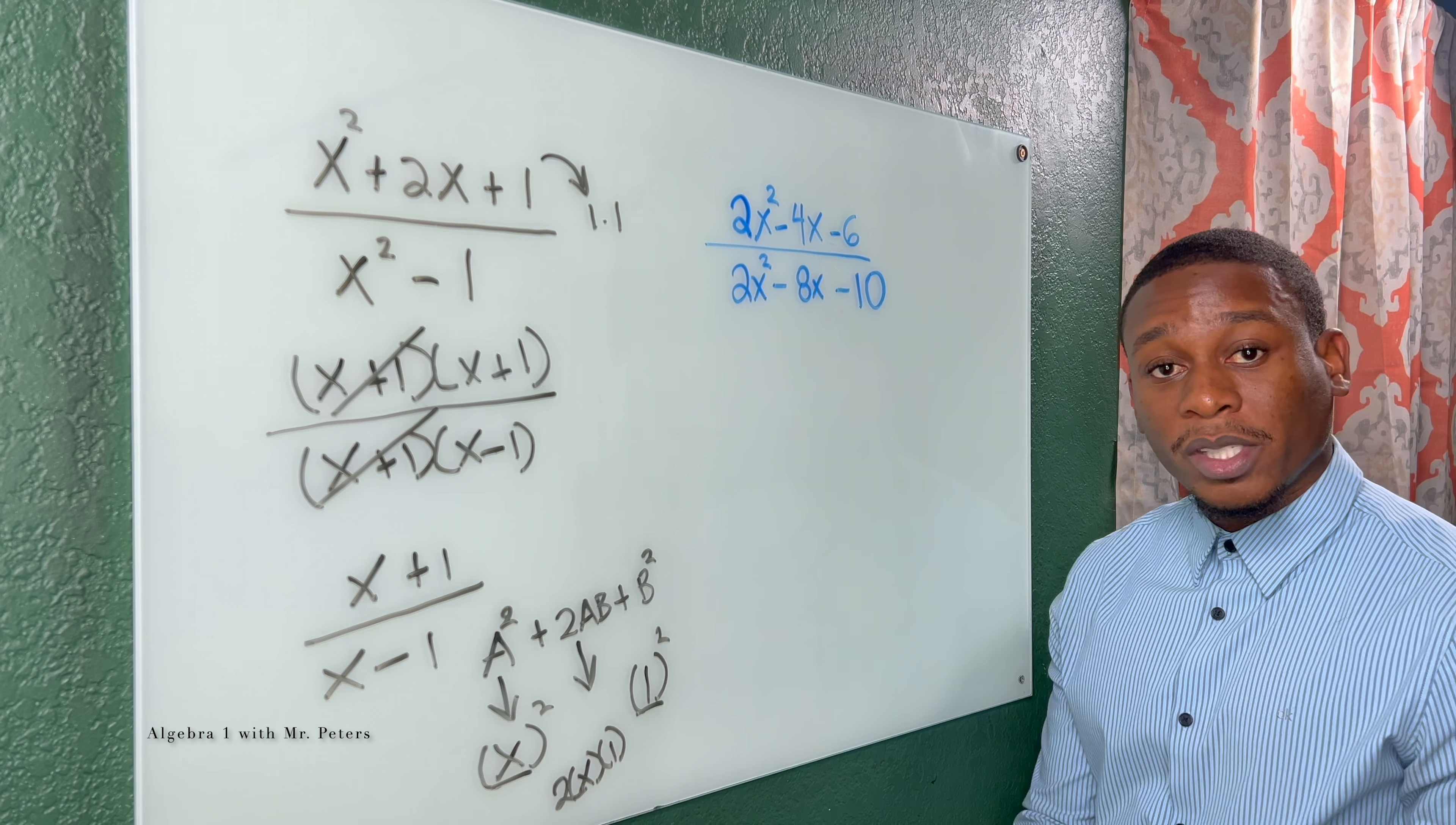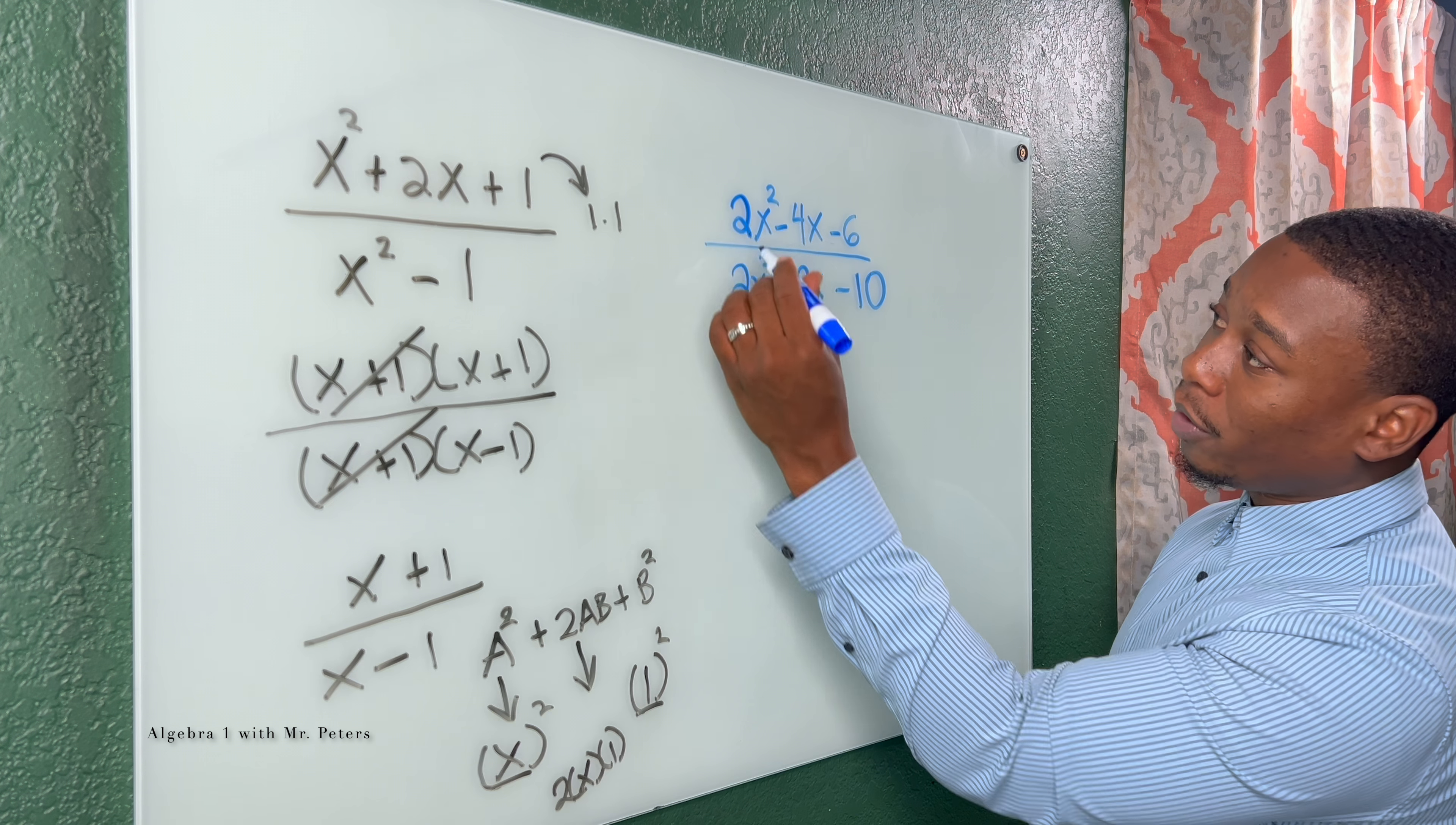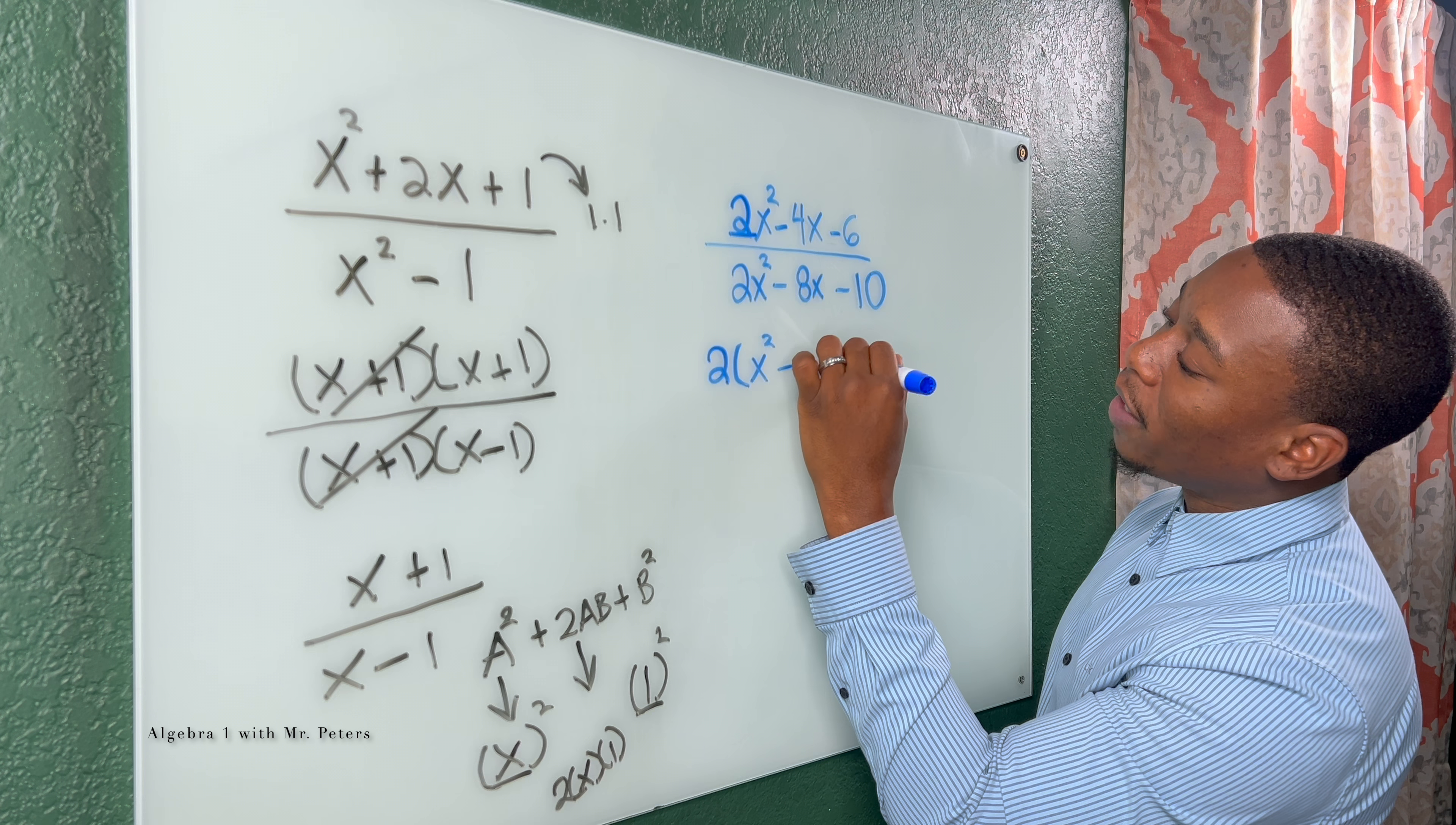Now this example, similar to one of our last ones, we are going to have to do more than one step of factoring. So the first thing we want to do in both the numerator and denominator is take out the greatest common factor, which would be 2. So when I take out 2 from the numerator, we have x squared minus 2x minus 3.